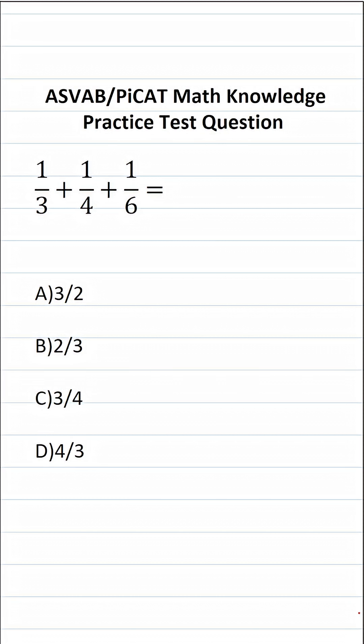This math knowledge practice test question for the ASVAB and PiCAT says 1/3 plus 1/4 plus 1/6 equals. On the ASVAB and PiCAT, you're not given a reference sheet or a calculator.